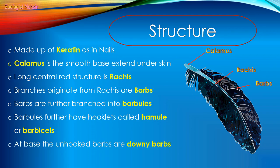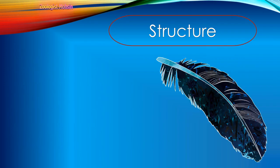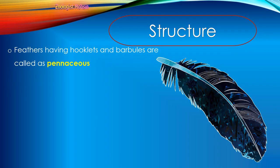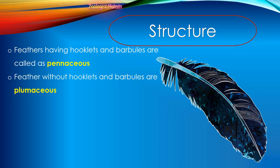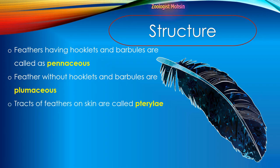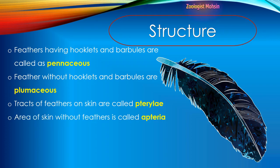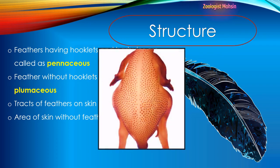At the base, the unhooked barbs are called downy barbs. So the basic structures present in a feather are: calamus, rachis, barbs, barbules, hooklets, and downy barbs. Feathers having hooklets and barbules are called pennaceous — this is a basic term asked in many exams. Feathers without hooklets and barbules are plumaceous, just like a plume. Tracks of feathers on the skin are called pterylae, while the area of skin without feathers is called apteria.